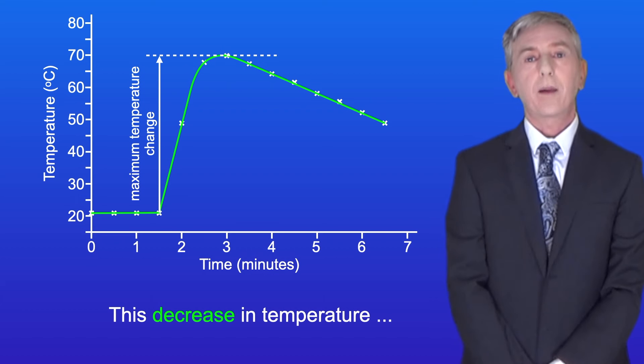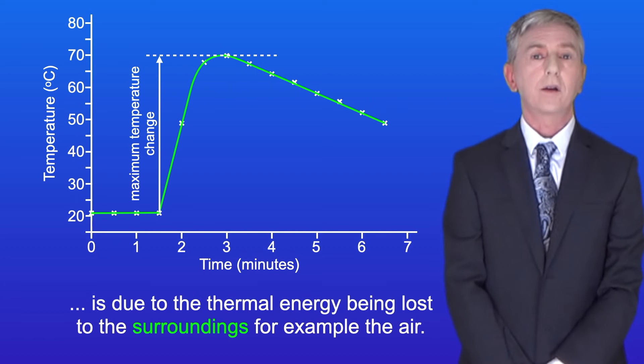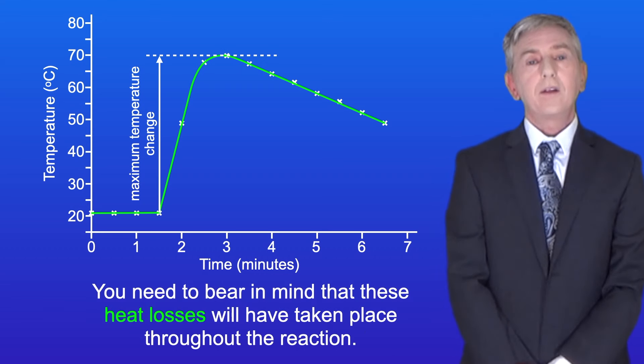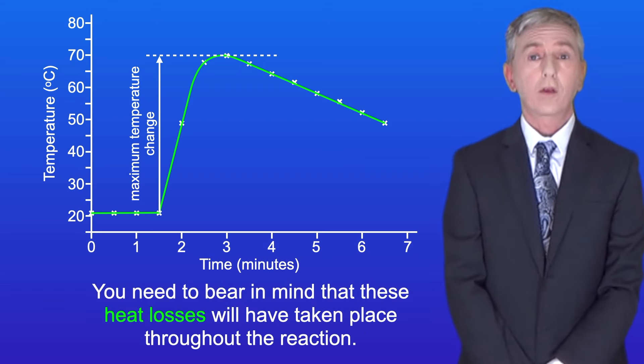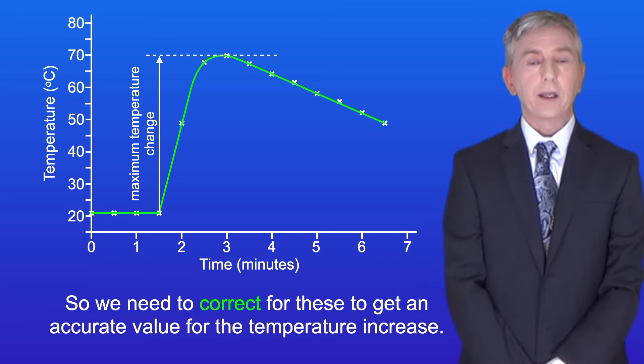This decrease in temperature is due to the thermal energy being lost to the surroundings, for example the air. Now you need to bear in mind that these heat losses will have taken place throughout the reaction, so we need to correct for these to get an accurate value for the temperature increase.